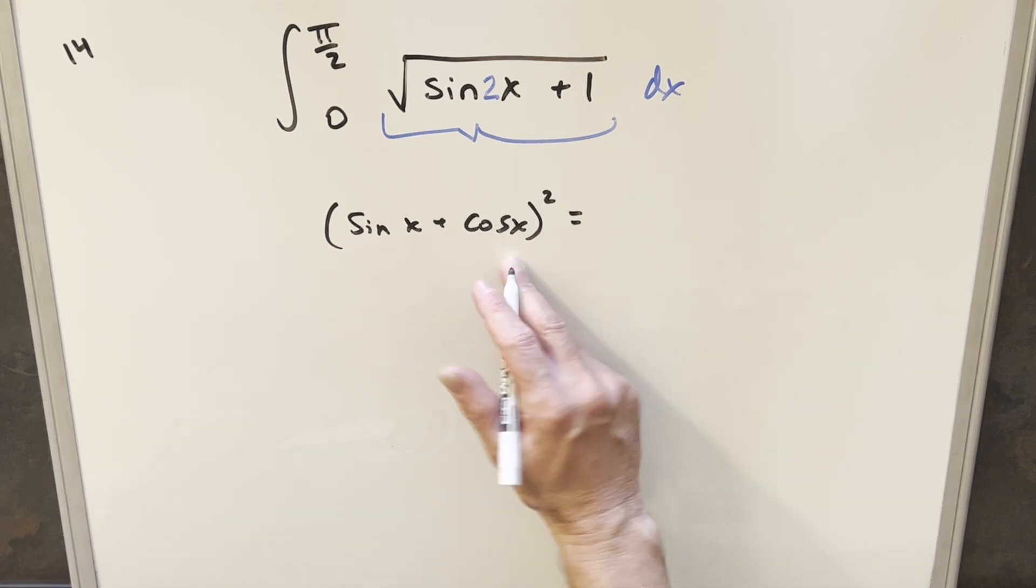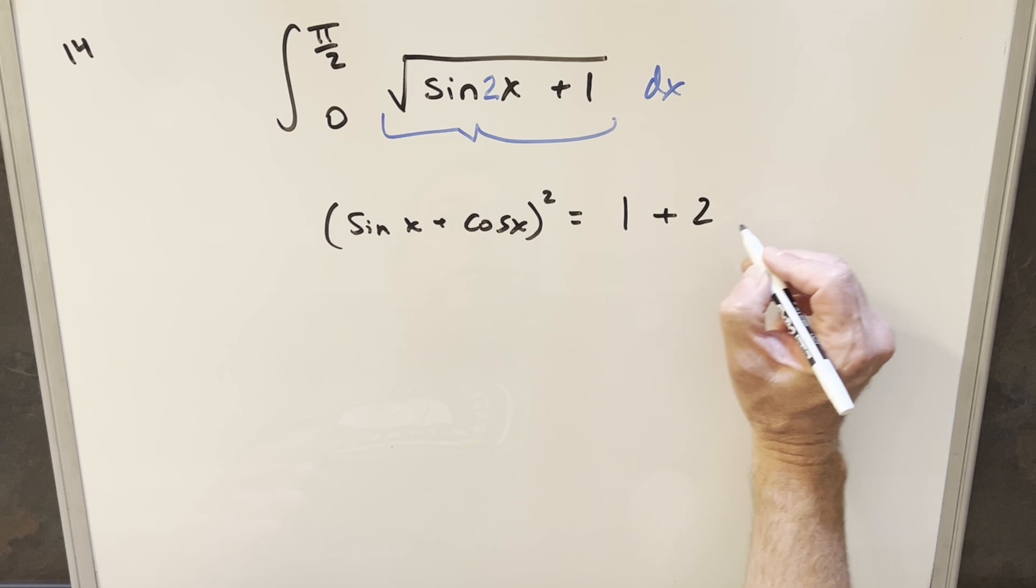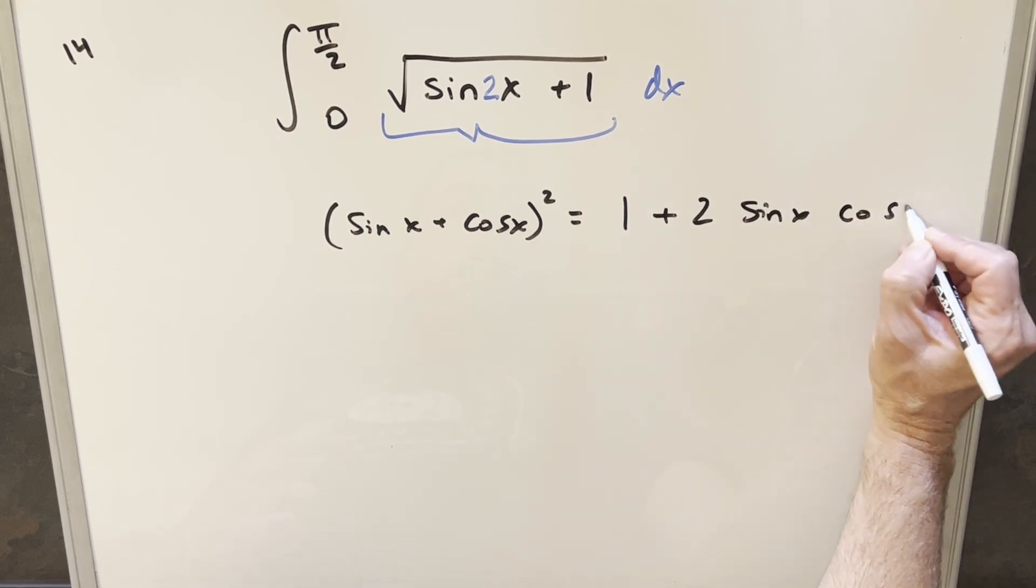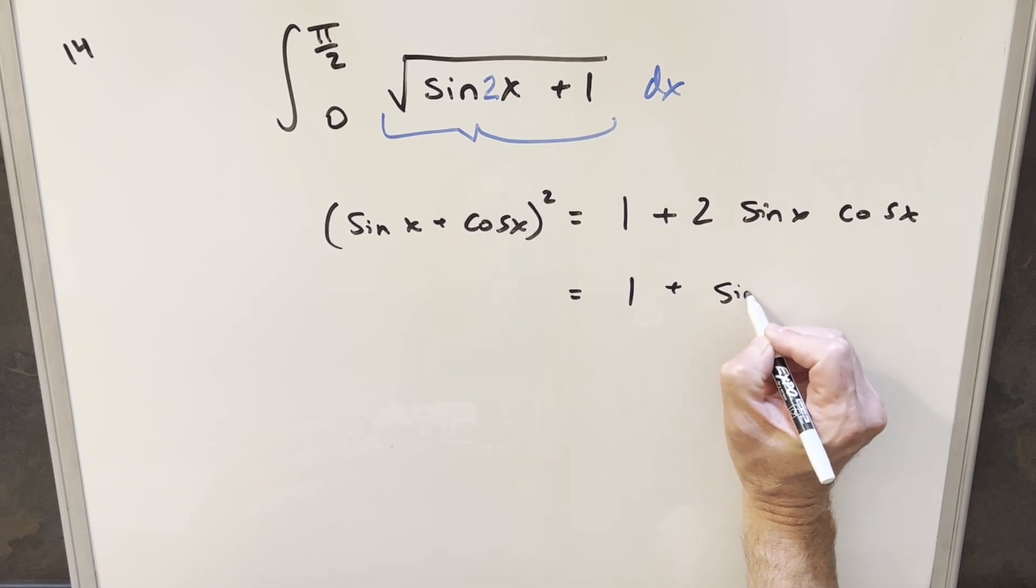you get sine squared x plus cosine squared x, but that's just going to be 1. And then the middle terms are going to be 2 sine x cosine x. But then with the double angle formula, we could just write this as sine 2x.